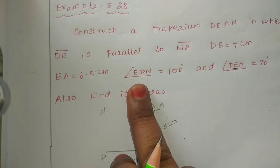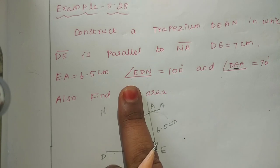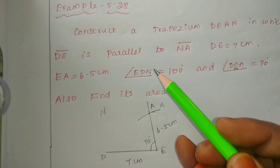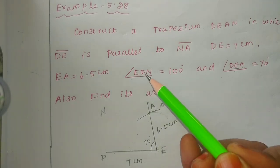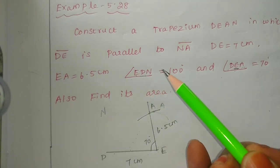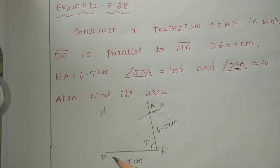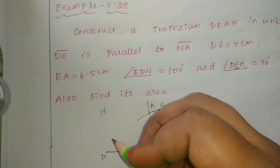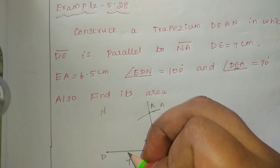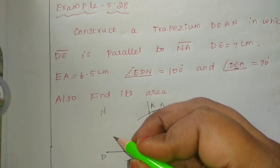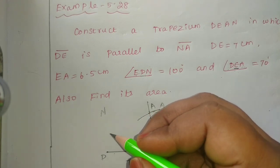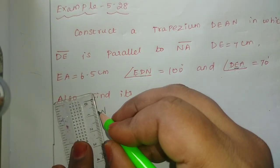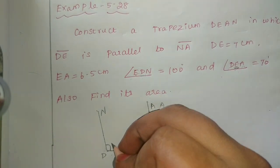The last part is D, E, D, N. D is the angle part. The angle at D — we start the degrees: 20, 30, 40, 50, 60, 70, 80. 90 is a straight angle. 100 is a little slant angle. So 100 degrees.